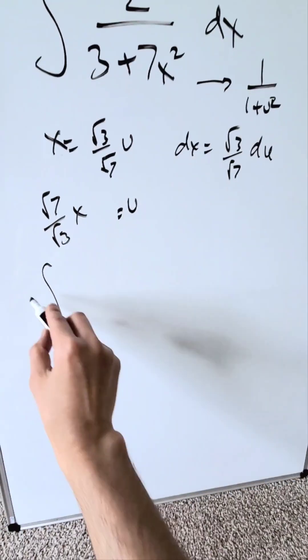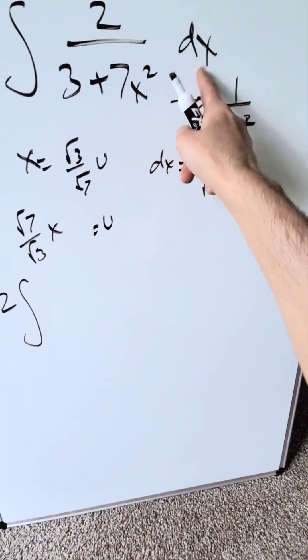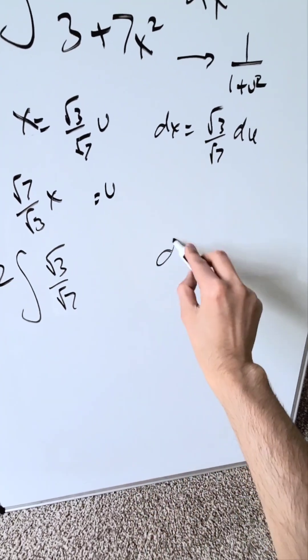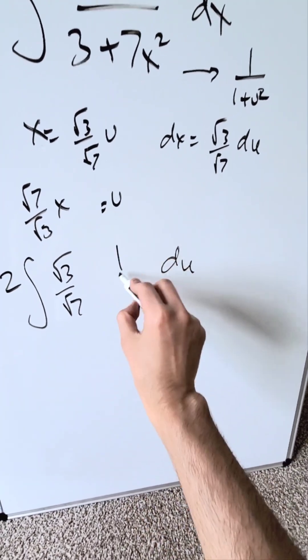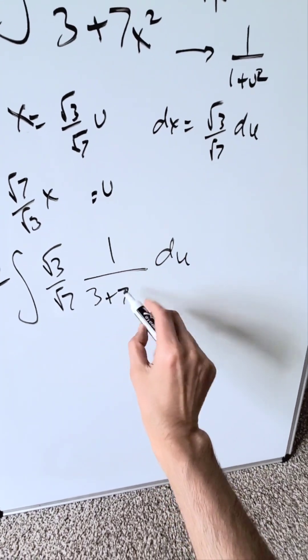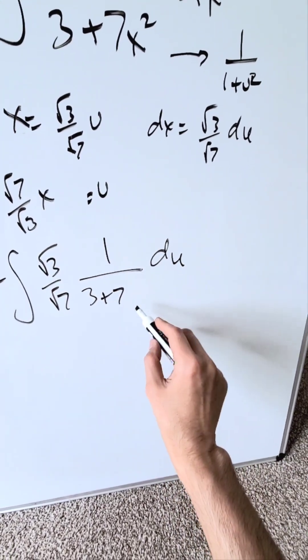I have this 2 sitting out. I can bring it over here. I know now dx is equal to this root 3 over root 7. I'm going to push a du over here. I'm looking here at 1 over. Now let's bring in the substitutions: 3 plus 7, x here is equal to root 3 over root 7 u.